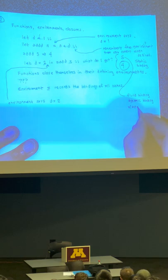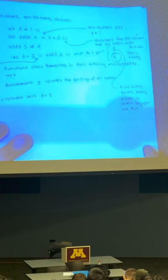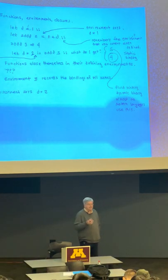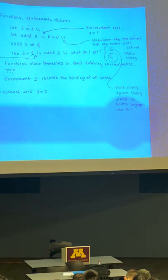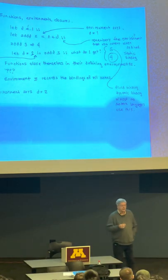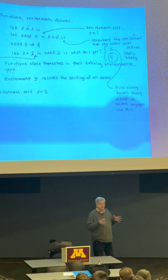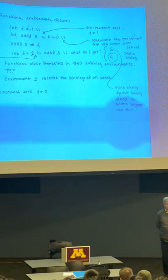The other possibility — where you look up the value of a variable in the calling environment — is called fluid binding, sometimes also called dynamic binding. Almost no modern languages use this. It turns out dynamic binding is easier to implement than static binding, and some early languages did it because people didn't know better at the time. The main exception is Common Lisp, which actually has both static and dynamic binding — you can tell it to use dynamic binding for a specific variable.